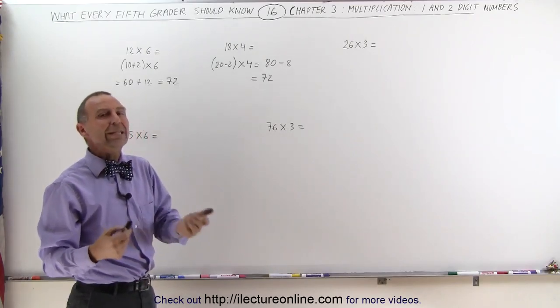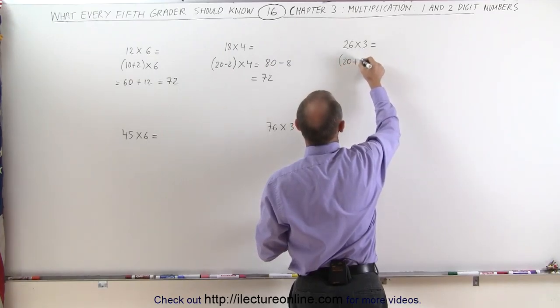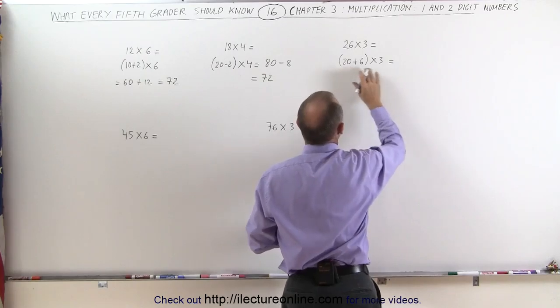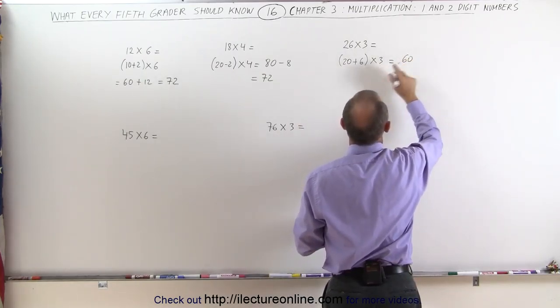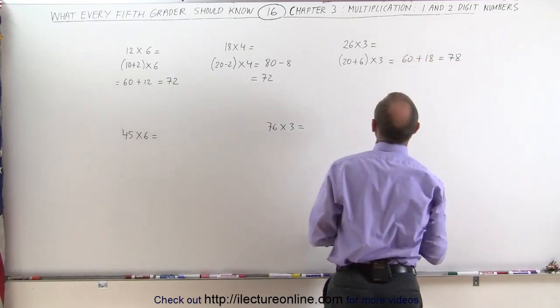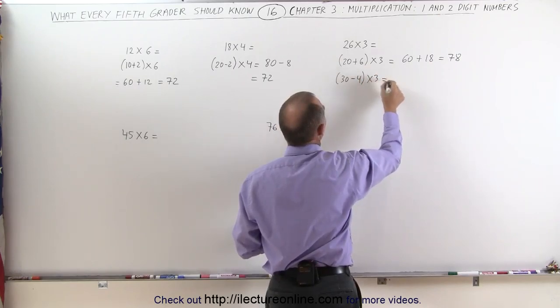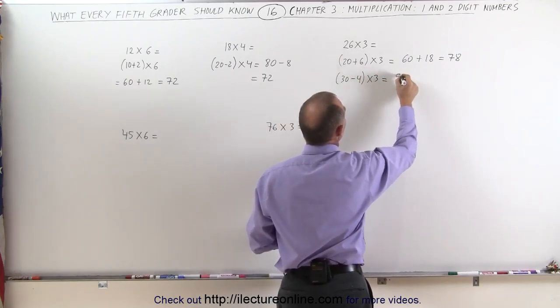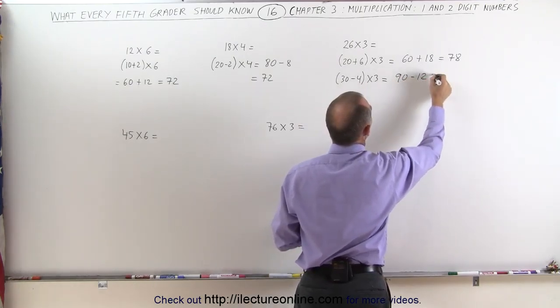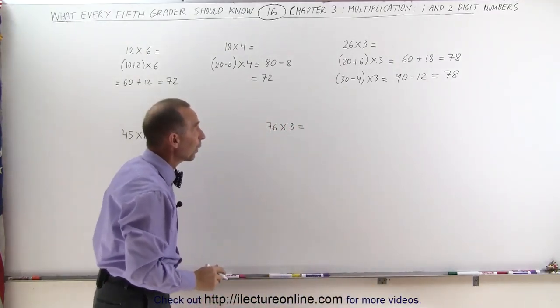26 times 3, you could do it either way. You can think of it as 20 plus 6 times 3. 20 times 3 is 60. 6 times 3 is 18. 60 plus 18 is 78. Or you can think of it as 30 minus 4 times 3. 30 times 3 is 90. 4 times 3 is 12. 90 minus 12 is 78. You get the same answer either way.